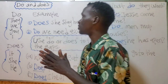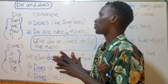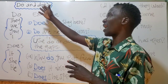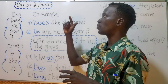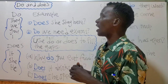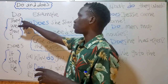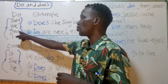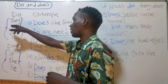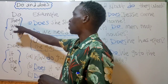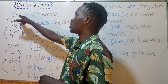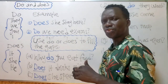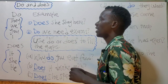Let us get in direct without wasting time. Today we have: how to use 'do' and 'does.' 'Do' is used when you are talking about 'they,' 'we,' 'you,' and 'I.' When you're talking about these pronouns, you use 'do.'